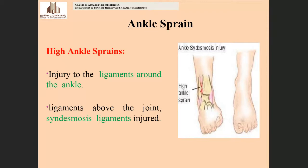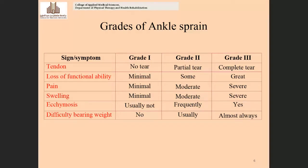Apart from those, there is a third type in the ankle region: high ankle sprain. High ankle sprain means there is the possibility of ligament injury around the ankle region — any ligaments injured surrounding the ankle joint. The ligaments above the joint, especially the syndesmosis ligaments, are involved. There are some ligaments present in the inferior tibiofibular joint, and if these are injured, it is called high ankle sprain.